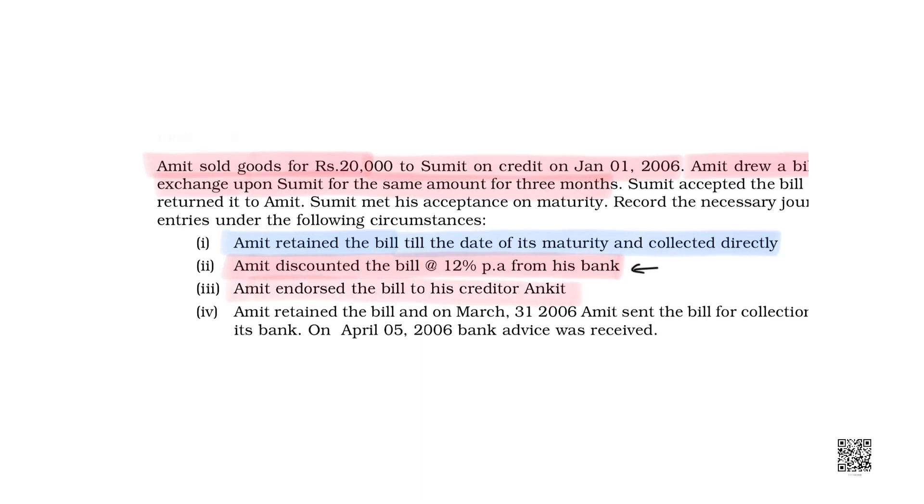The third case is: what if Amit endorses this bill to one of his creditors? When Amit sold goods to Sumit, Amit is holding a bill as an asset — the way he holds cash in his hand, he is holding that bill. The only difference is cash is highly liquid, but this bill will get converted into cash after three months and three days. At the same time, Amit has one creditor in his books — his name is Ankit.